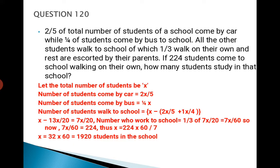So x minus 13x/20 is equal to 7x/20. Therefore, number who walk to school is equal to 1/3 of 7x/20, which is equal to 7x/60.